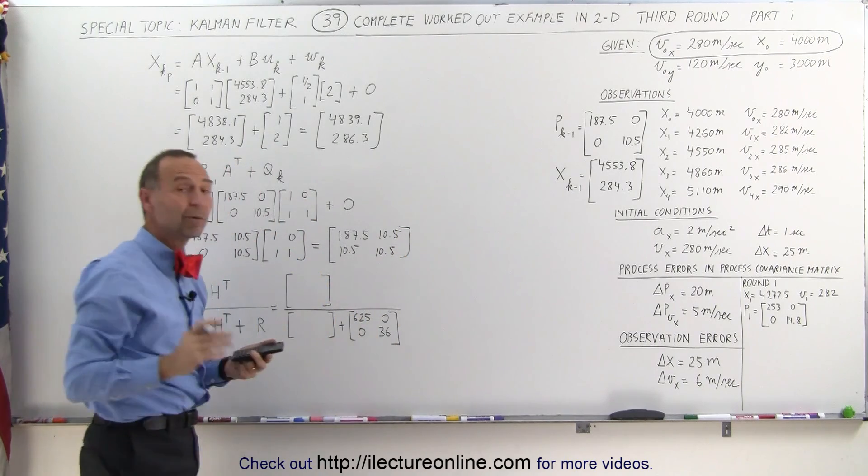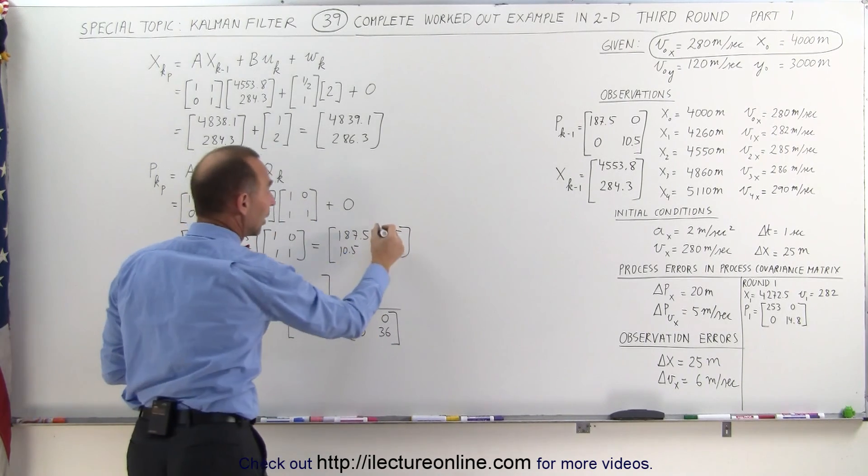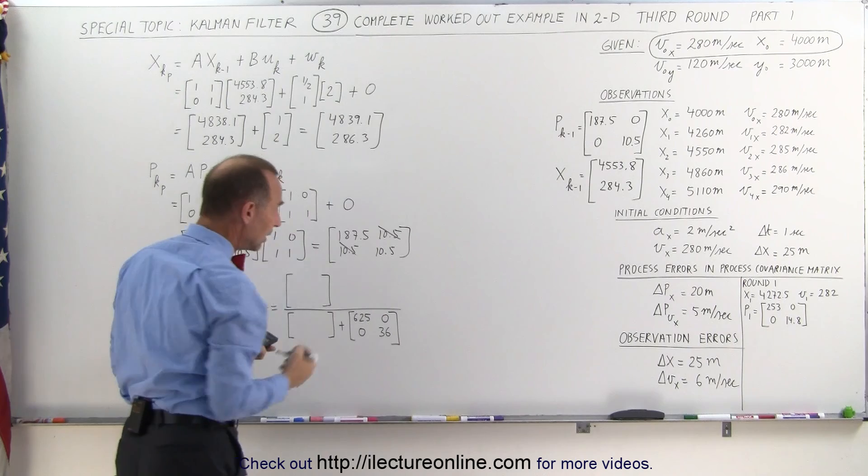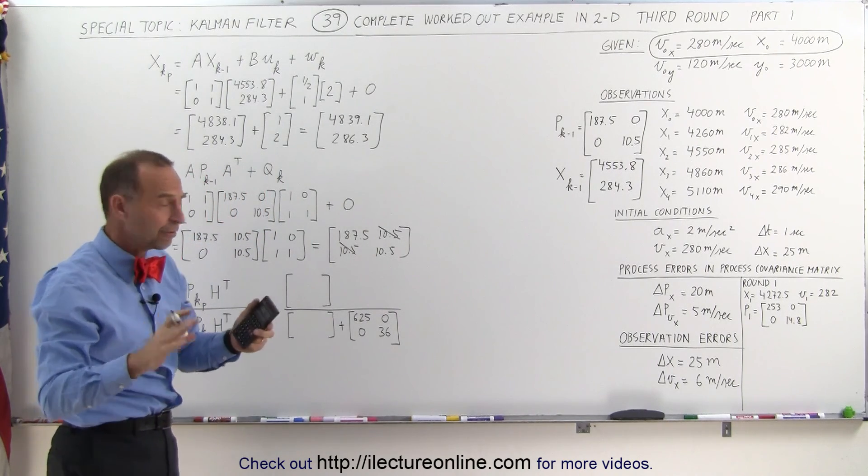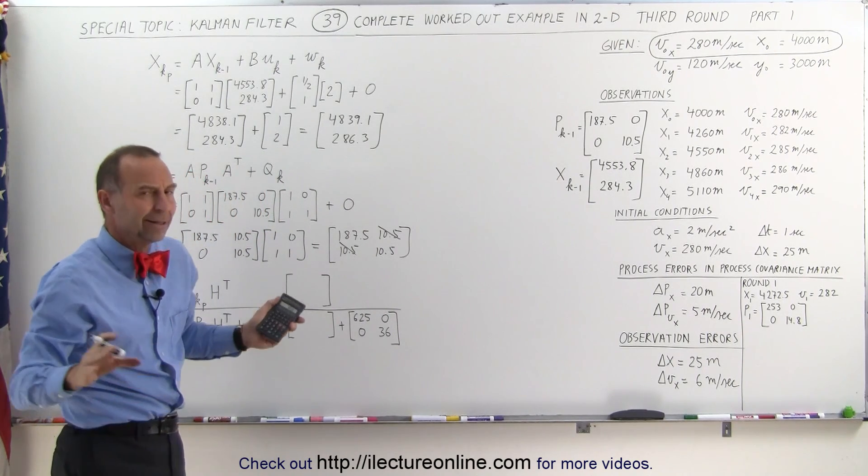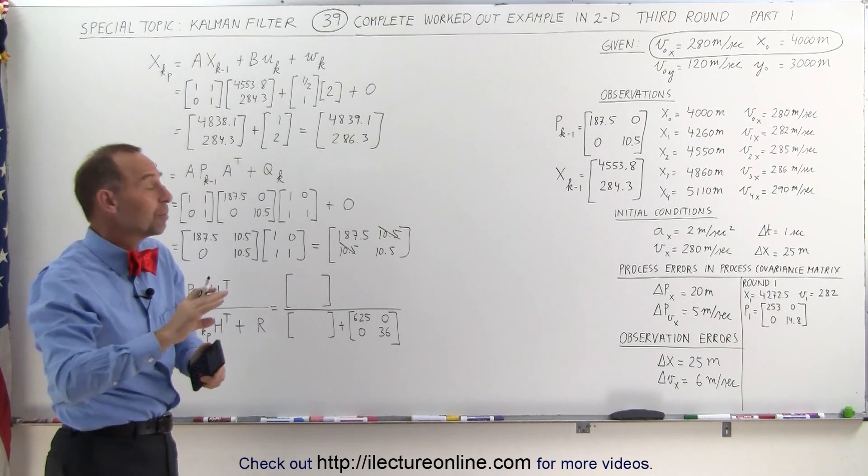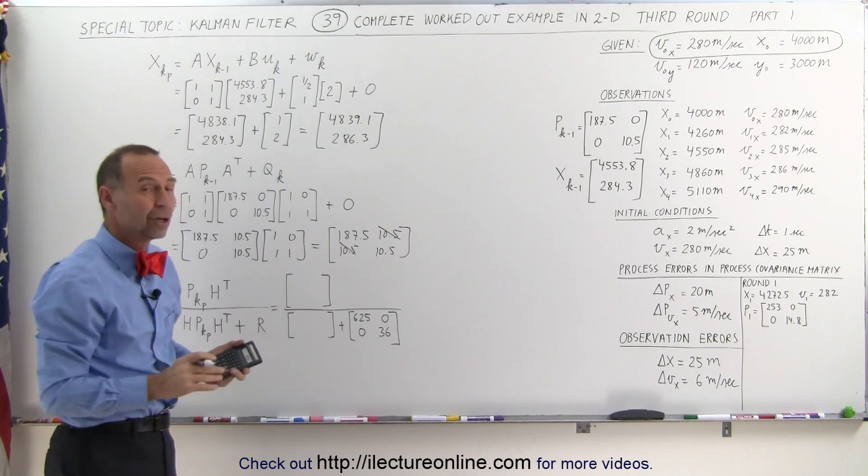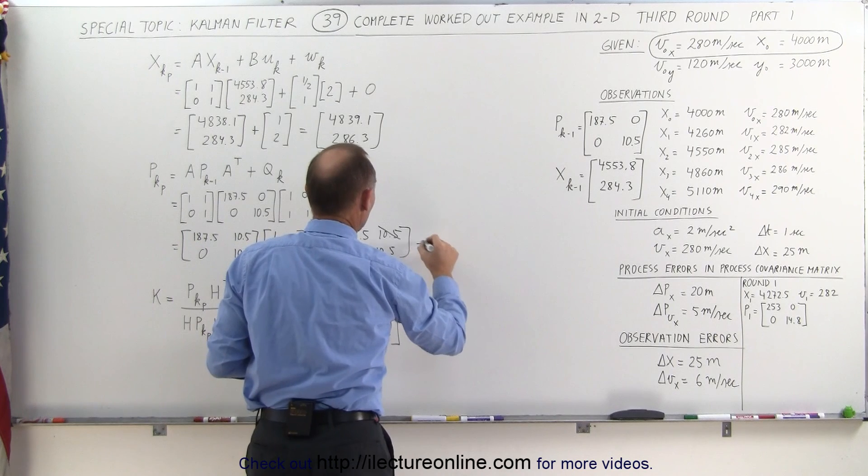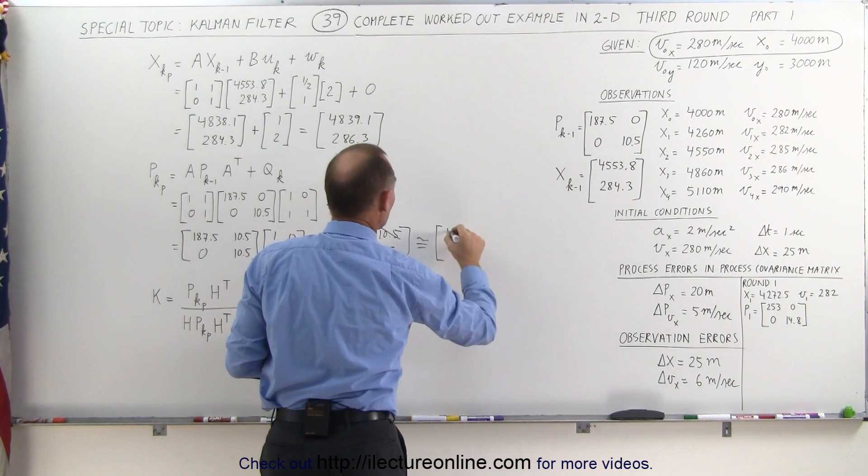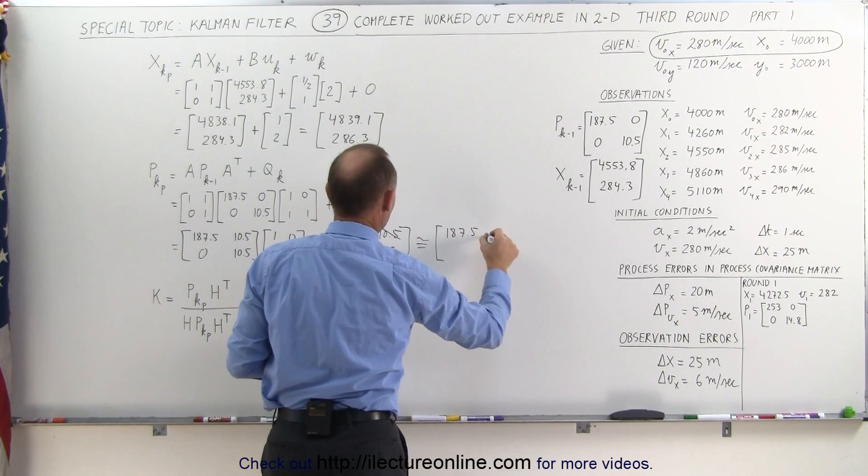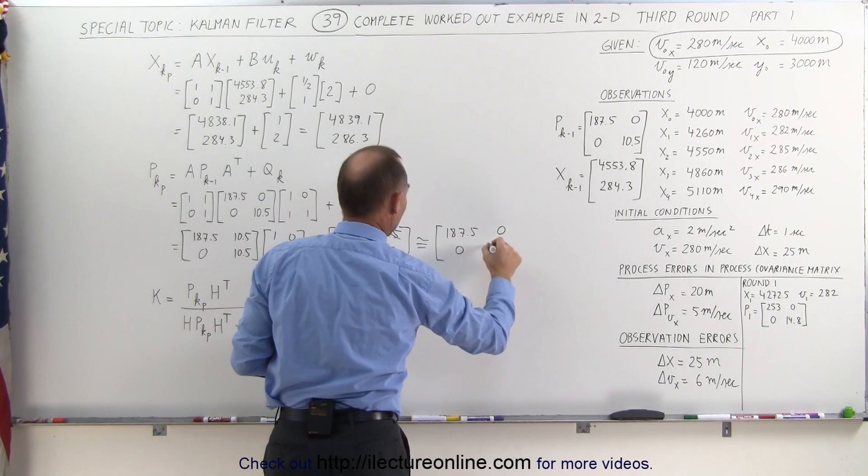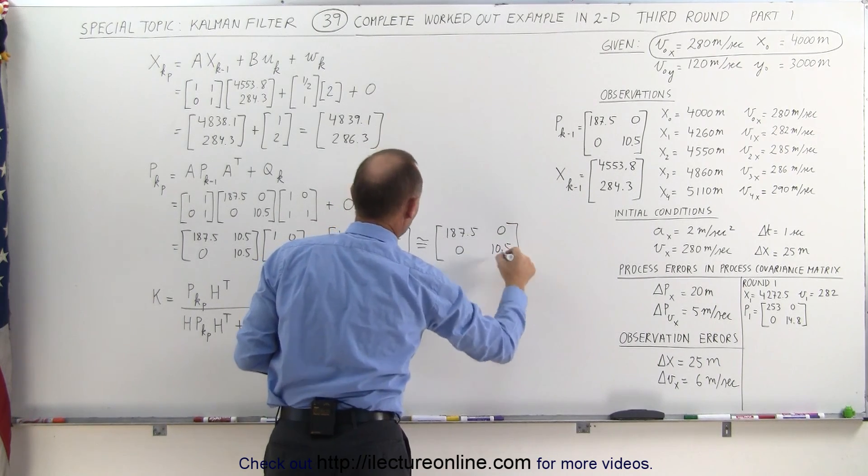Remember like we did before, we're going to get rid of the cross terms, because we want to simplify our example at this point. Let's assume that there's no relationship between position and velocity, therefore we don't have to consider the cross terms in the covariance matrix, so this becomes approximately equal to 187.5, 0, 0, and 10.5.